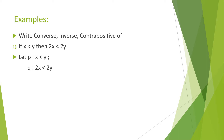Consider this example to write converse, inverse, and contrapositive. The given conditional statement is: if x is less than y, then 2x is less than 2y. So let's take P as 'x is less than y' and statement Q as '2x is less than 2y.' So the given conditional statement is P implies Q.